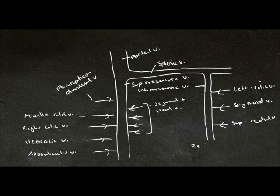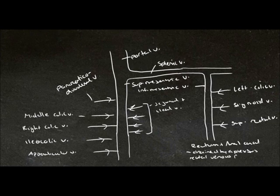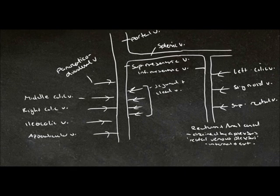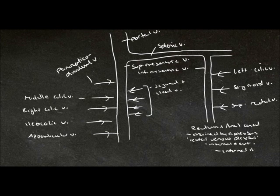The rest of the rectum and the anal canal are drained by a plexus called the rectal venous plexus, and there's an internal and an external plexus. And this plexus drains into the internal iliac vein and the internal pudendal vein, which drain into the systemic circulation.